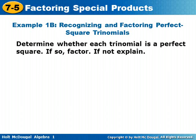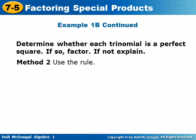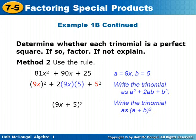Determine whether each trinomial is a perfect square. If so, factor. If not, explain. For 81x squared plus 90x plus 25: 81x squared is a perfect square — 9x times 9x, or 9x squared. 25 is a perfect square — 5 times 5, or 5 squared. The middle term would need to equal 9x times 5 times 2. So to factor, a is 9x and b is 5. The middle would be 2 times 9x times 5, so we factor into a plus b squared, which is 9x plus 5, in parentheses, squared.